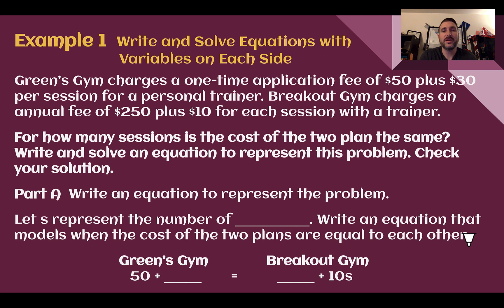Example one, write and solve equations with variables on each side. Green's gym charges a one-time application fee of $50 plus $30 per session for a personal trainer. Breakout gym charges an annual fee of $250 plus $10 for each session with a trainer.